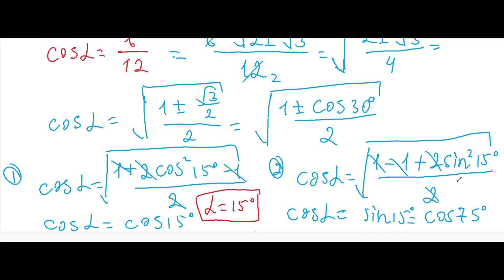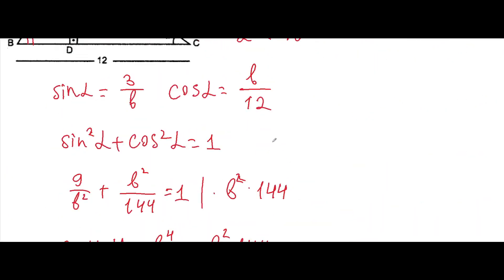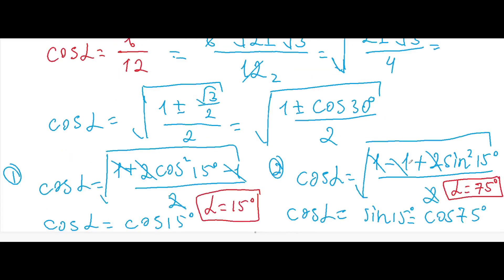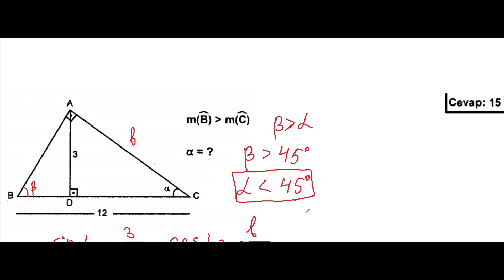This means alpha equals 75 degrees or 15 degrees. Most students mess up here and forget that alpha is less than 45 degrees, which means we have to get rid of the 75-degree answer. The first answer, alpha equals 15 degrees, is the correct answer.